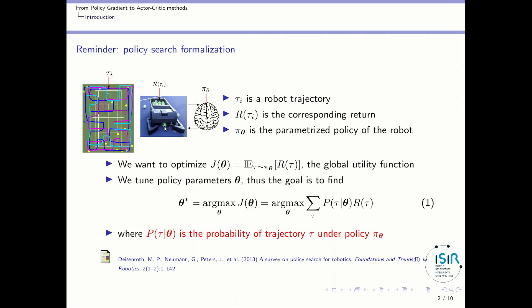We have to consider three objects. First, we have a set of trajectories tau. Second, we have the reward along this trajectory, which corresponds to a number of balls, and we call it R of tau. And third, we have the controller of the robot, which is a parameterized policy where theta is a vector of parameters — for instance, weights and biases in a neural network.